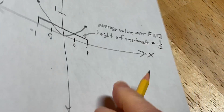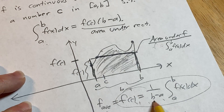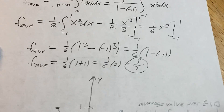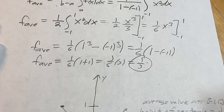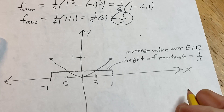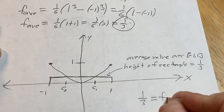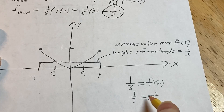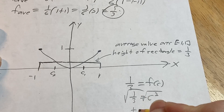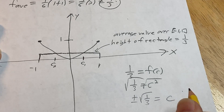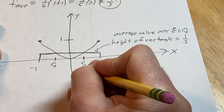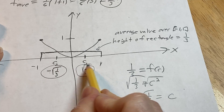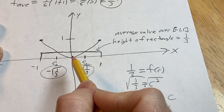To find the value of c, recall that f(c) equals the average value. We set the average value equal to f(c): since f(x) = x², we set 1/3 equal to c². Taking the square root of both sides gives c = ±√(1/3). So the two values of c guaranteed by the mean value theorem are c = √(1/3) and c = negative √(1/3).